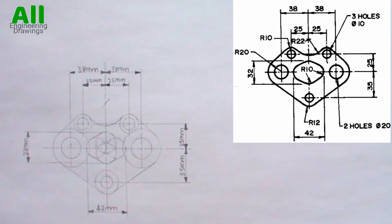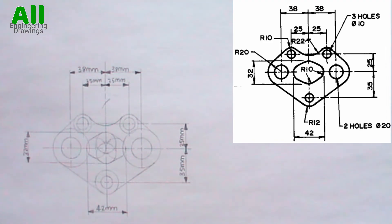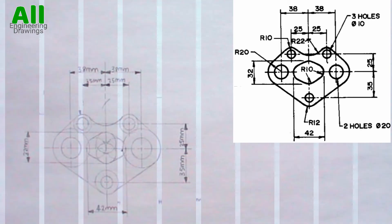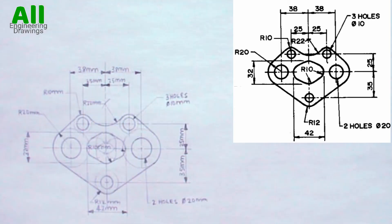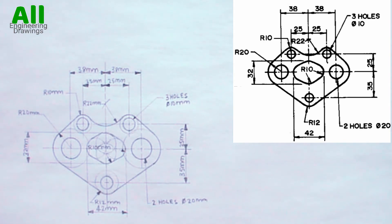The drawing has been completed. Now make bold the parts that are supposed to be bold and complete the dimensions. The above tangency problem has been drawn successfully.